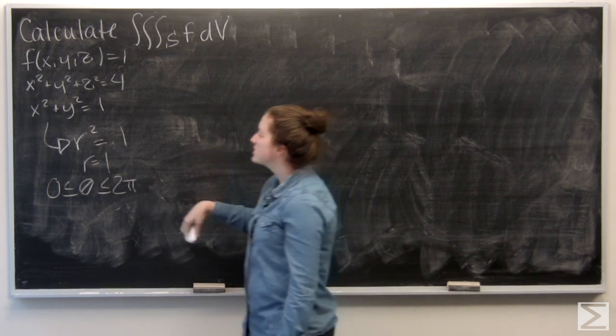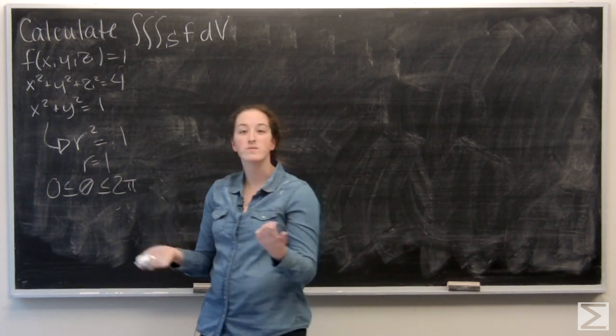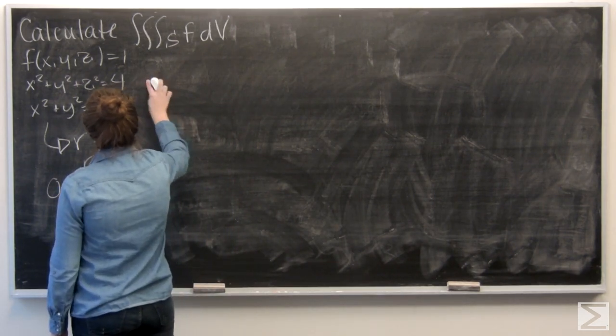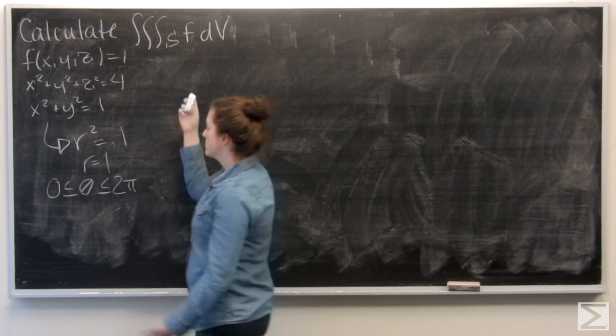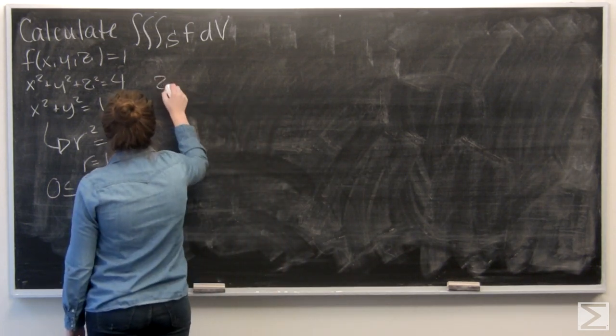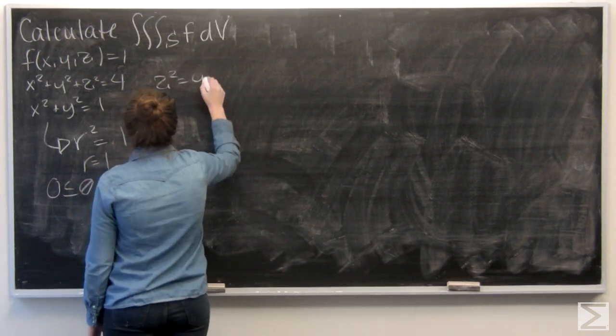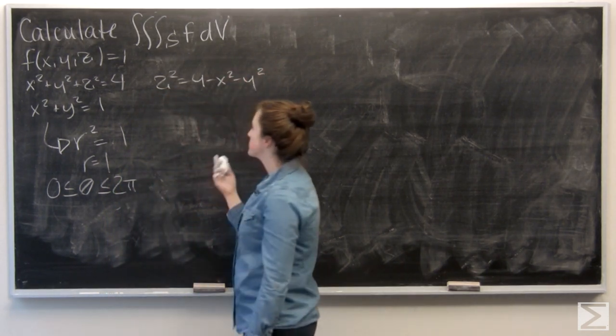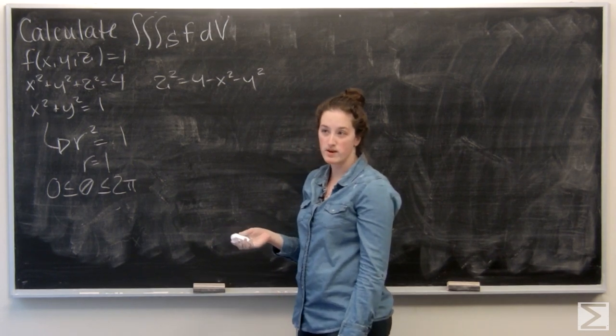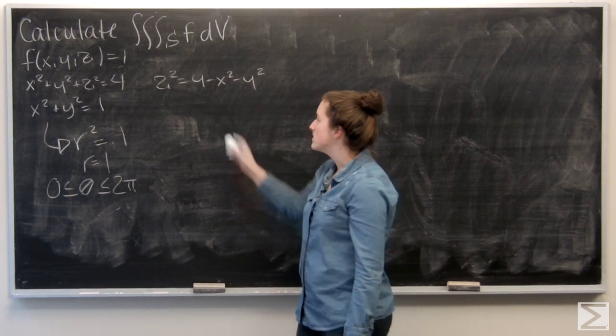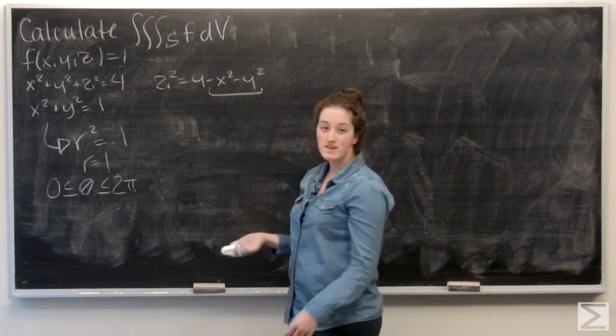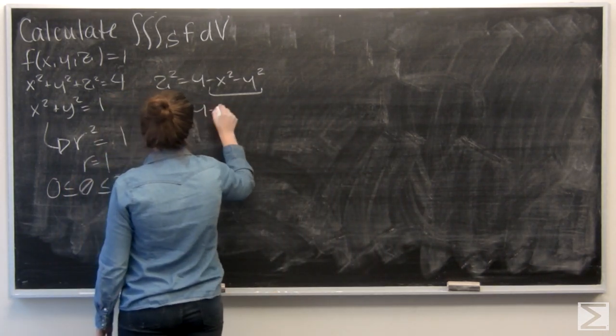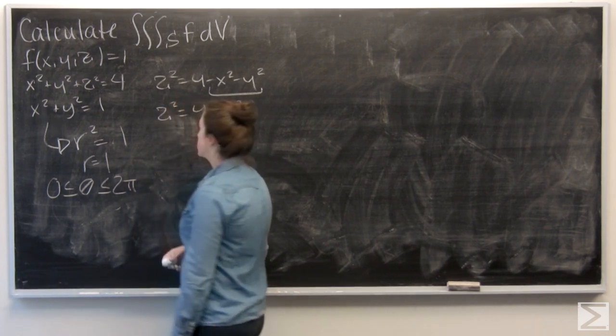So let's try to solve this equation for the sphere in terms of z. So I'm going to sub out, let's get started. So I have z squared equals 4 minus x squared minus y squared. And we already did this once. That's going to be just like subtracting r squared. So z squared equals 4 minus r squared.